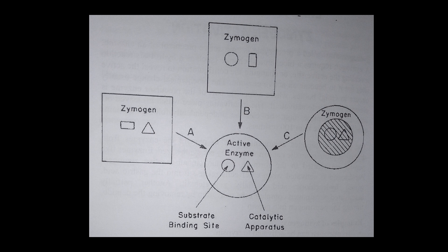For the second mechanism, mechanism B, it requires a conformational change of the catalytic apparatus site. The catalytic apparatus is changed — in the diagram, that is represented as a rectangle changing into a triangle. So that's another mechanism of zymogen activation: changing the structure of the catalytic apparatus. The third mechanism, represented as C, shows that the shape of the substrate binding site and the catalytic apparatus is the same for the zymogen and the active enzyme, but there is an occlusion — something that is covering the zymogen so that the substrate cannot bind.